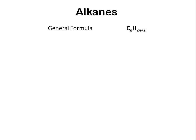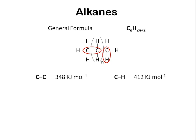Alkanes are described by the general formula CnH2n+2. They are hydrocarbons in which all the atoms are joined by single covalent bonds. The carbon-carbon bonds and carbon-hydrogen bonds are high in enthalpy, i.e. they are strong. This means they are not very reactive.